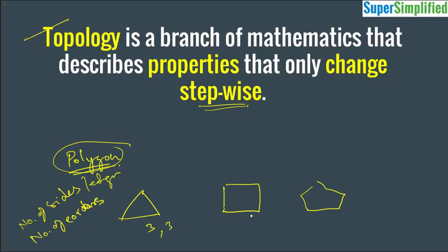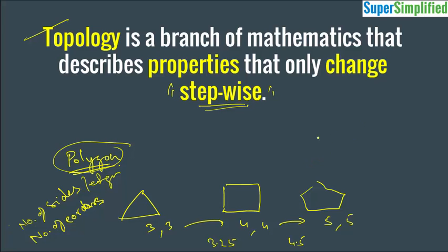Here you have three edges and three corners. Here you have four edges and four corners. Here you have five edges and five corners. So you don't have 3.25 or 3.5 or 4.5 — it is increasing as a whole number. And it is an inherent property — you cannot imagine a triangle without a side, edge, or corner. This is an inherent property increasing stepwise, so we can say it is a topological invariant.